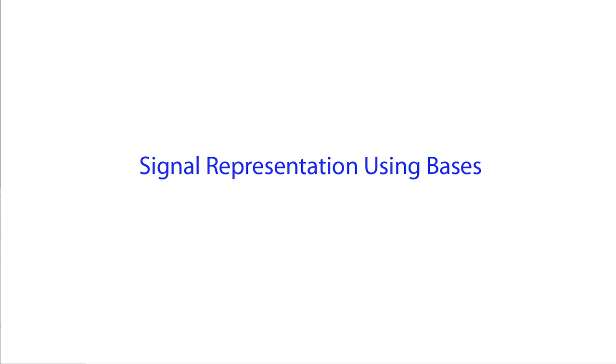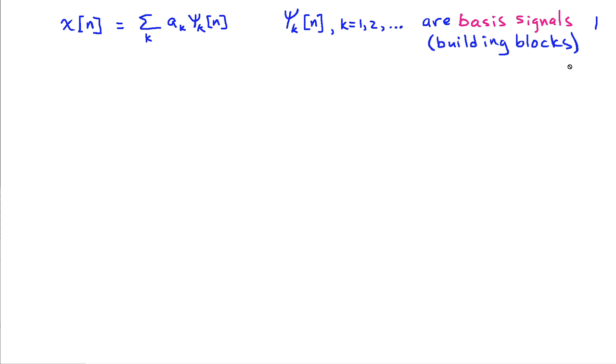In this lecture, we're going to look at the general problem of representing a signal in terms of a series of bases or basis signals. What we mean by representing a signal in terms of bases is to write a signal, x of n, as a weighted combination of other signals, where I have some weights, ak, and these other signals, or the basis signals, are psi k of n.